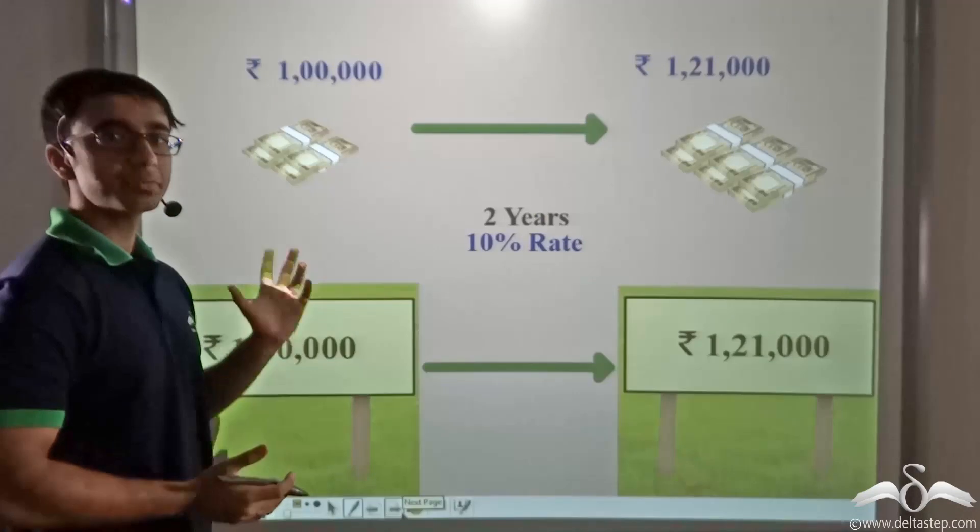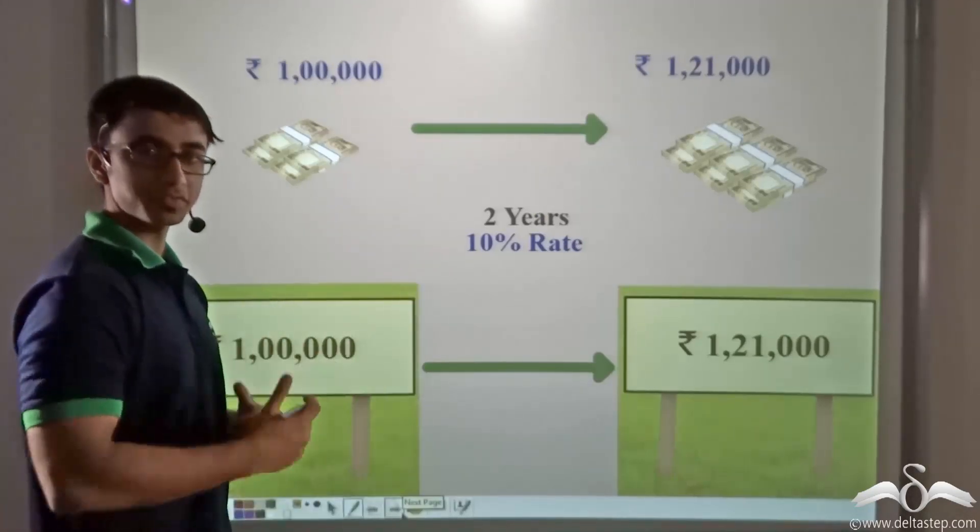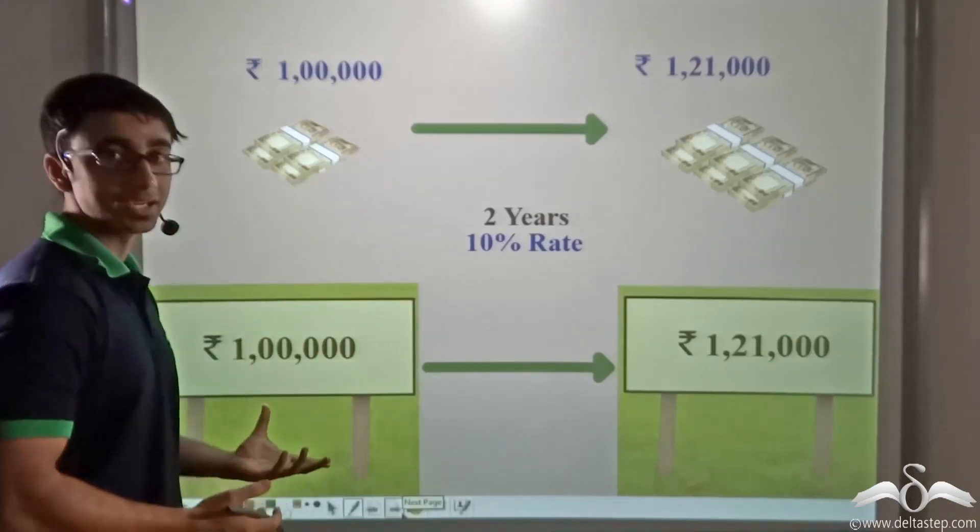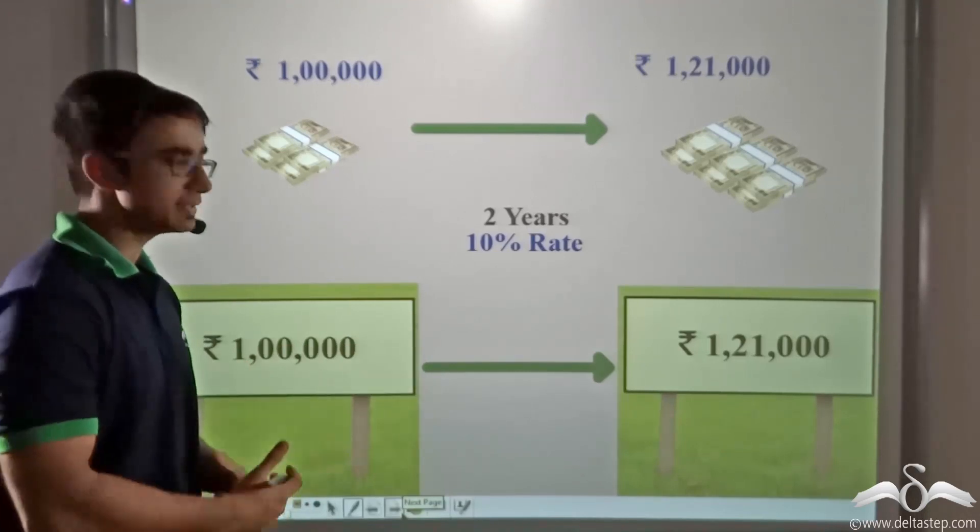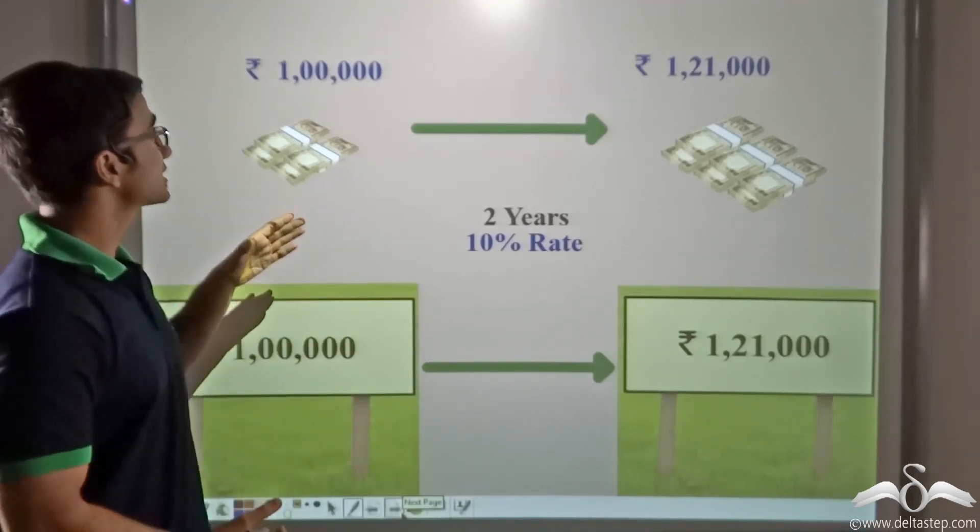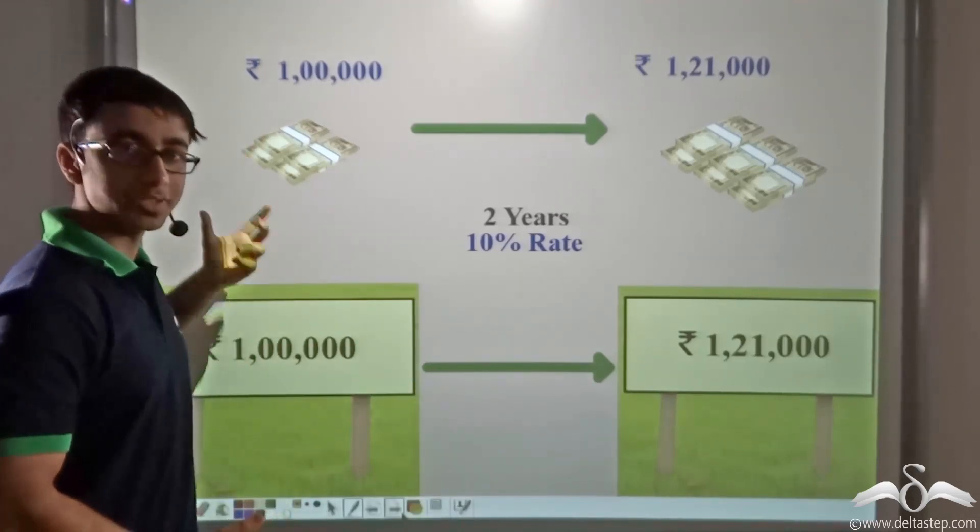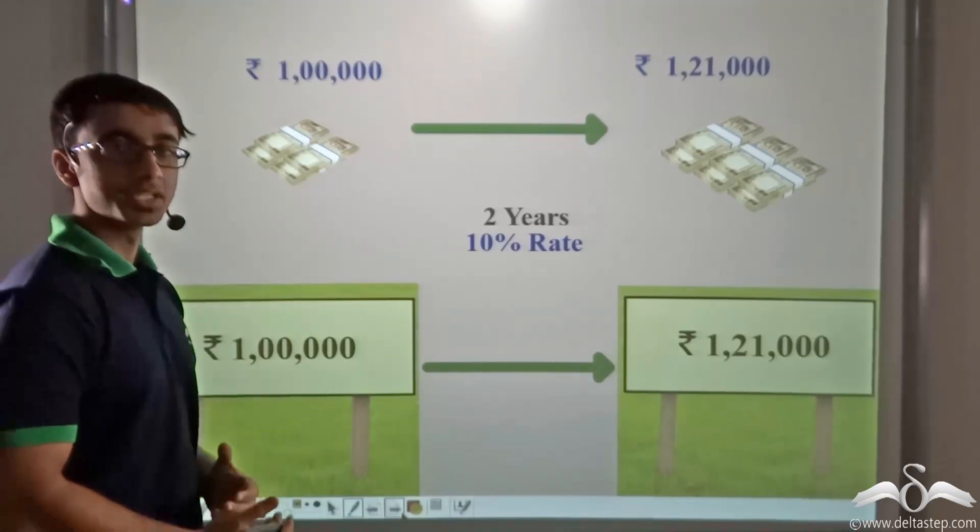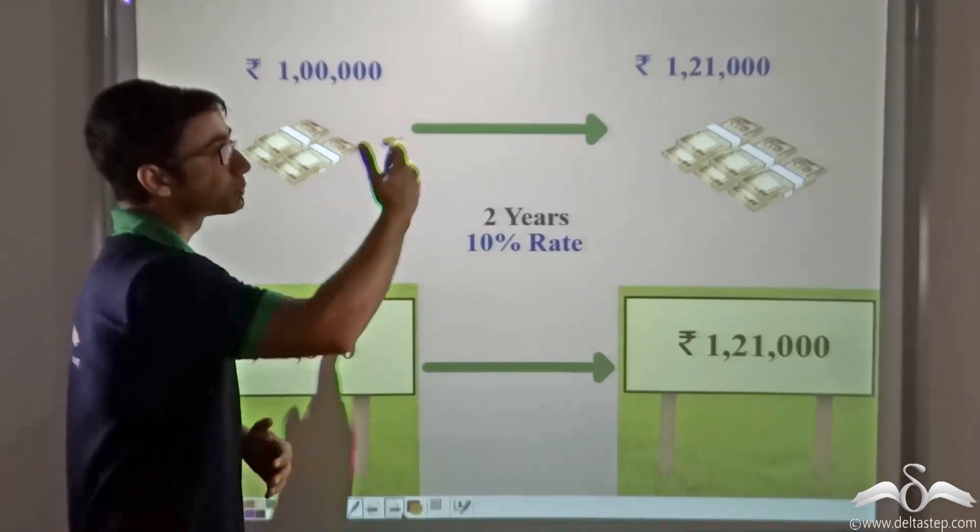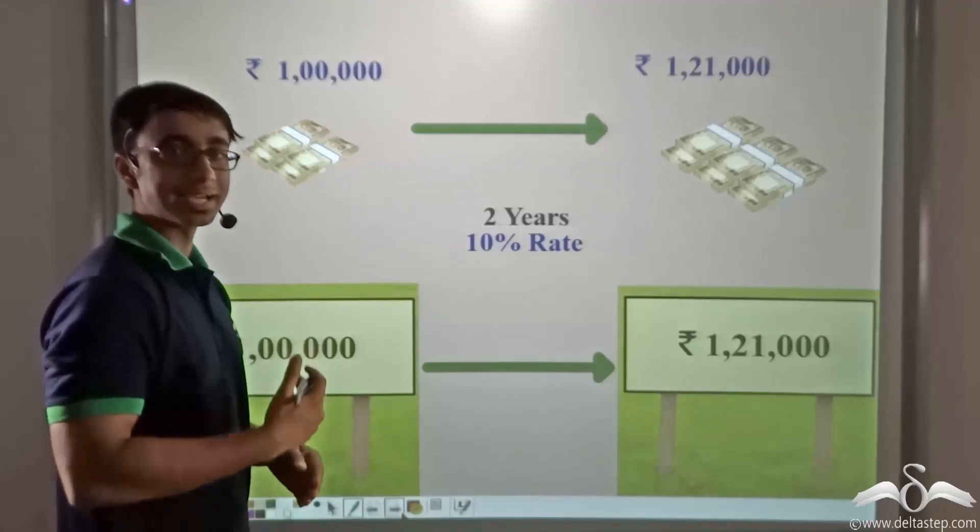So we saw that just like money can grow in a given span of time, even the value of land or any other commodity or entity can grow. So in this case both the value of land as well as the money grew from Rs 1 lakh to Rs 1 lakh 21,000 at the end of two years.